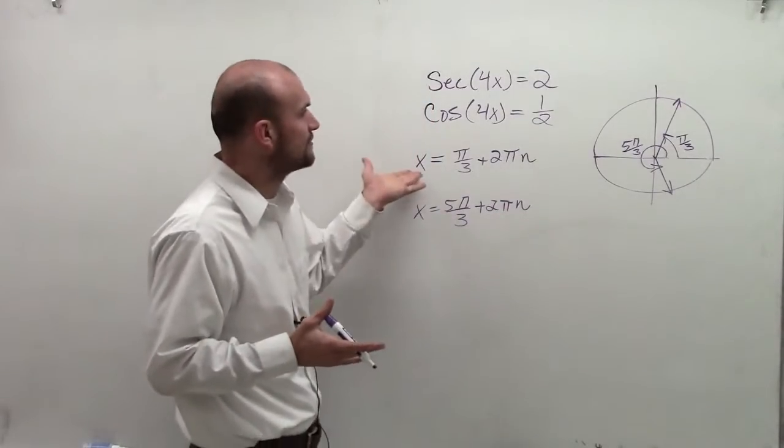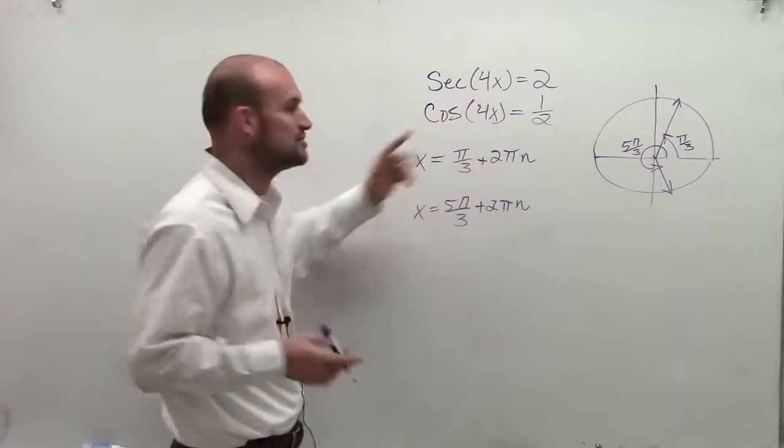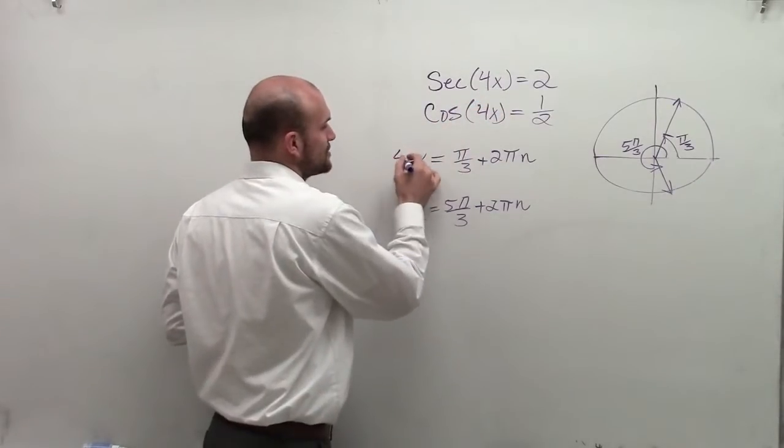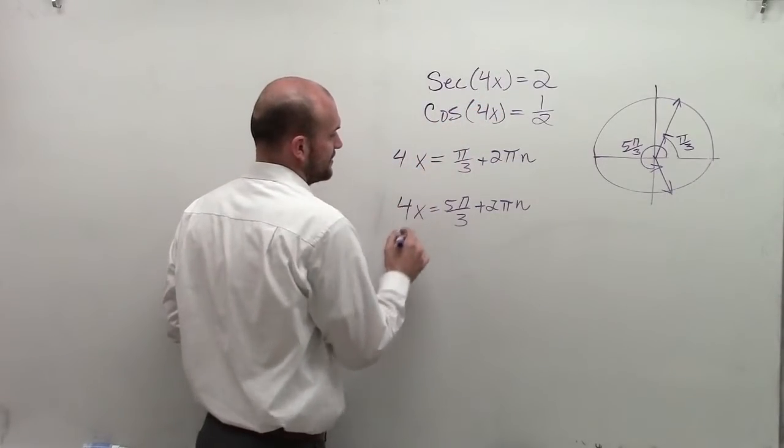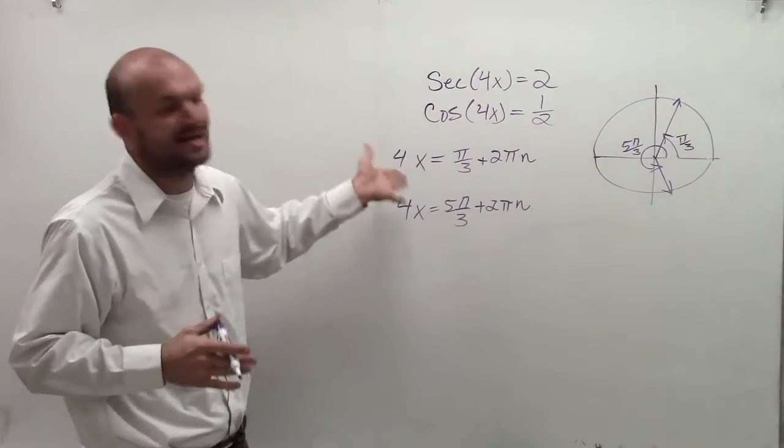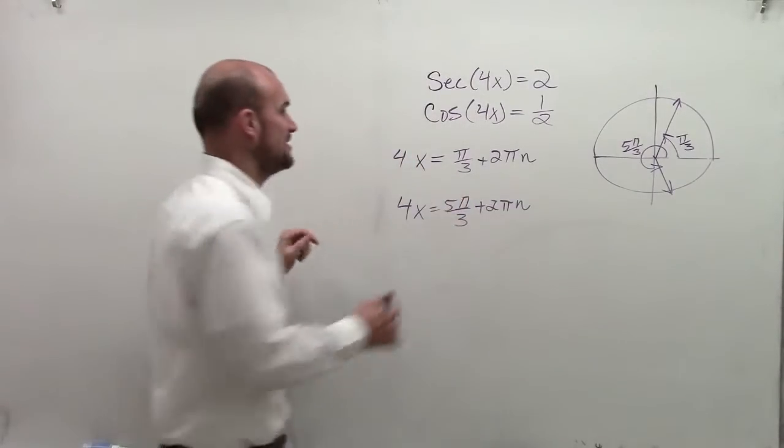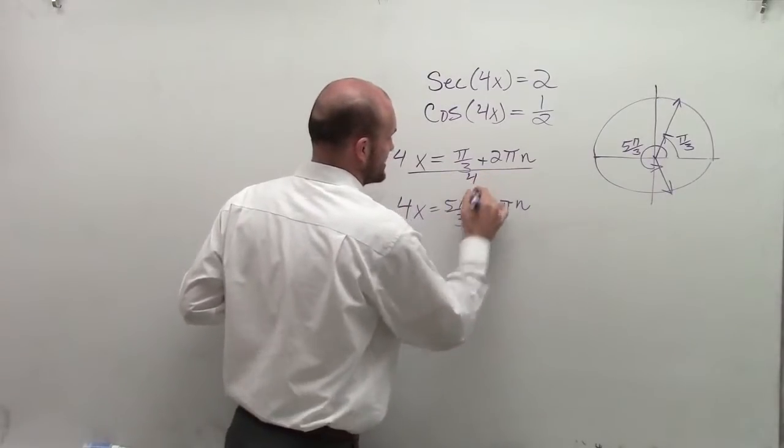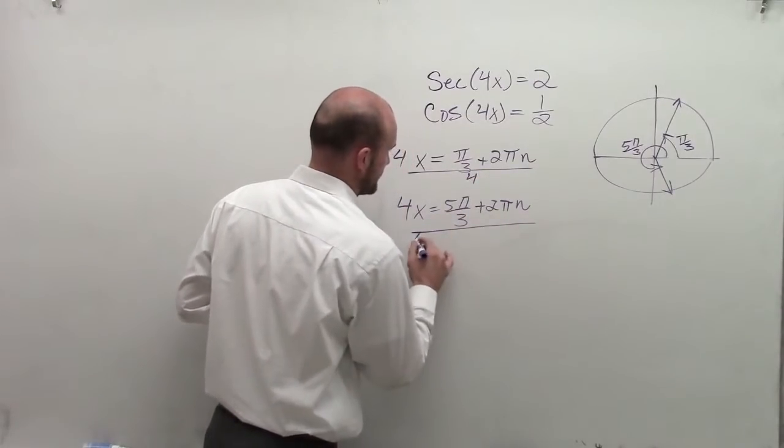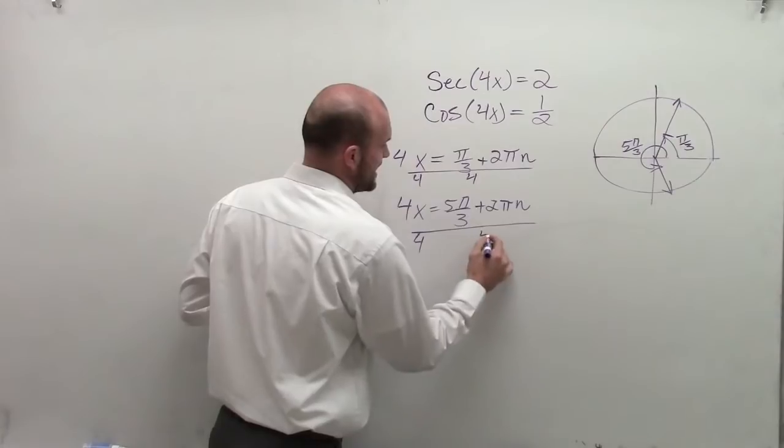However, we're not just solving for x. Because when you look at this, going back to your function, it says f of x equals 4x. So really, my equations are saying 4x equals pi over 3 plus 2 pi n. So therefore, I now need to solve for x by dividing by 4 on both sides.